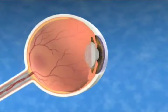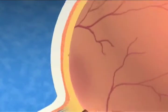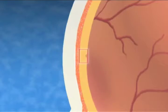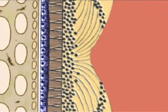The retina is made up of many layers which are sandwiched together into a smooth surface. These layers function together, allowing us to see clearly.